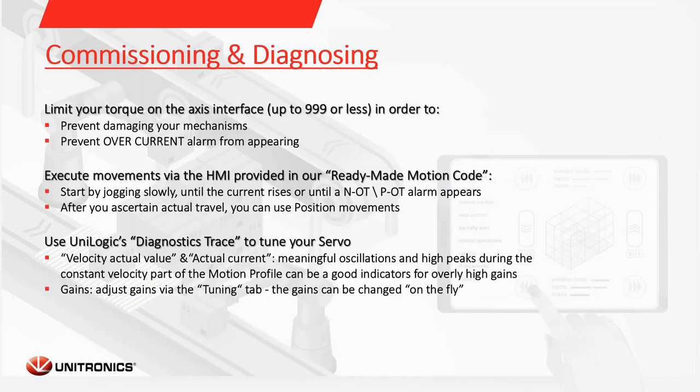To summarize the commissioning and diagnostics part: first, when you define your axis, limit your torque and optionally your speed. You should move the axis first to the direction you want to go, detect the edges of your application, and then execute position movements. Then you can tune your servo using the diagnostics trace and see how the axis acts according to the movements you execute.